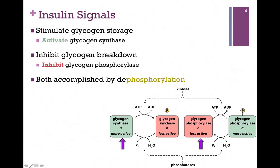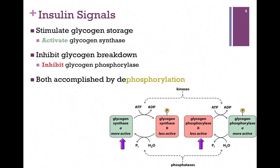A phosphatase will remove a phosphoryl group from glycogen synthase and convert it from its less active B form to its more active A form — A for active. The same enzyme will also remove a phosphoryl group from glycogen phosphorylase, thereby converting it to the less active form. So the same signal and the same enzyme will dephosphorylate and activate glycogen synthase and inactivate glycogen phosphorylase, encouraging glycogen synthesis and discouraging glycogen breakdown.